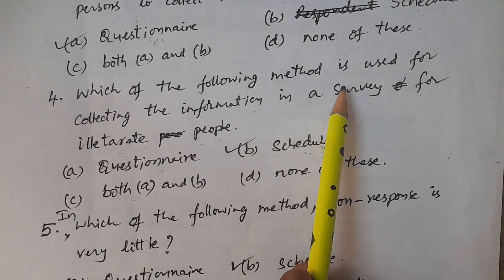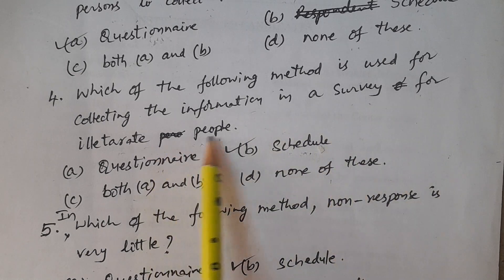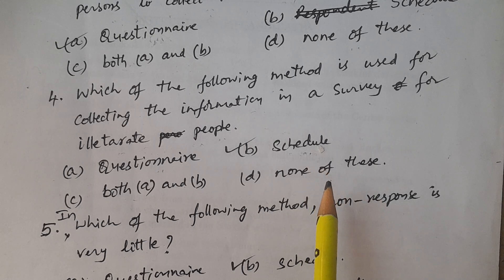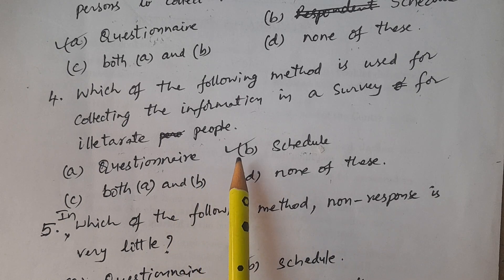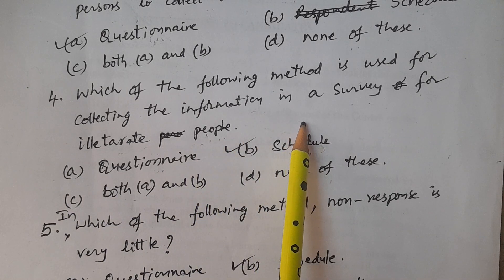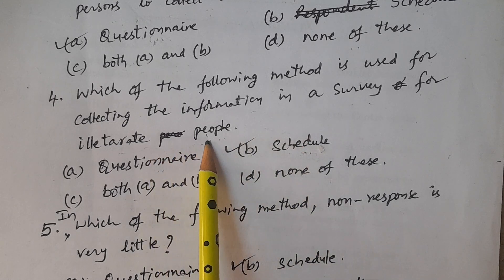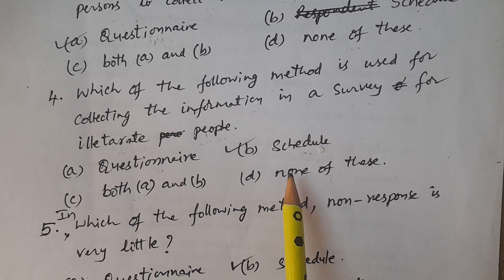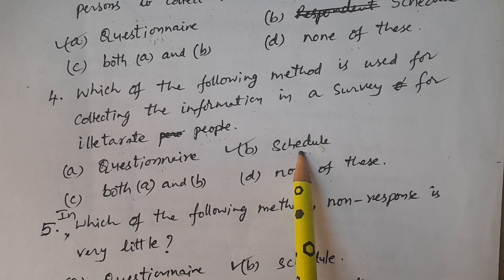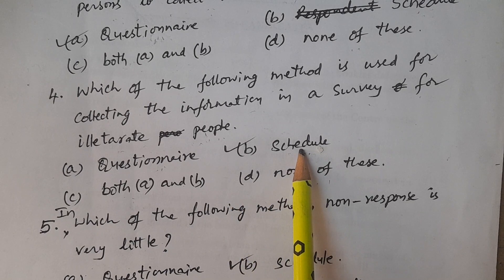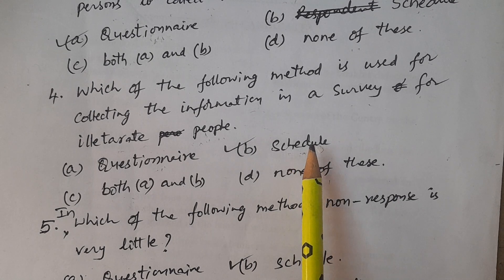In Telugu, the fourth question: which of the following methods is used for collecting information in a survey for illiterate people? Options: A. Questionnaire, B. Schedule, C. Both A and B, D. None. The answer is schedule, because the investigator fills the schedule.